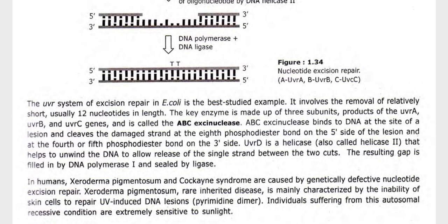The key enzyme is made up of three subunits, products of the UvrA, UvrB, and UvrC genes, and is called the ABC excinuclease. ABC excinuclease binds to DNA at the site of a lesion and cleaves the damaged strand at the 8th phosphodiester bond on the 5' side of the lesion, and at the 4th or 5th phosphodiester bond on the 3' side. UvrD, a helicase also called helicase II, helps to unwind the DNA to allow release of the single strand between the two cuts. The resulting gap is filled by DNA polymerase I and sealed by ligase.